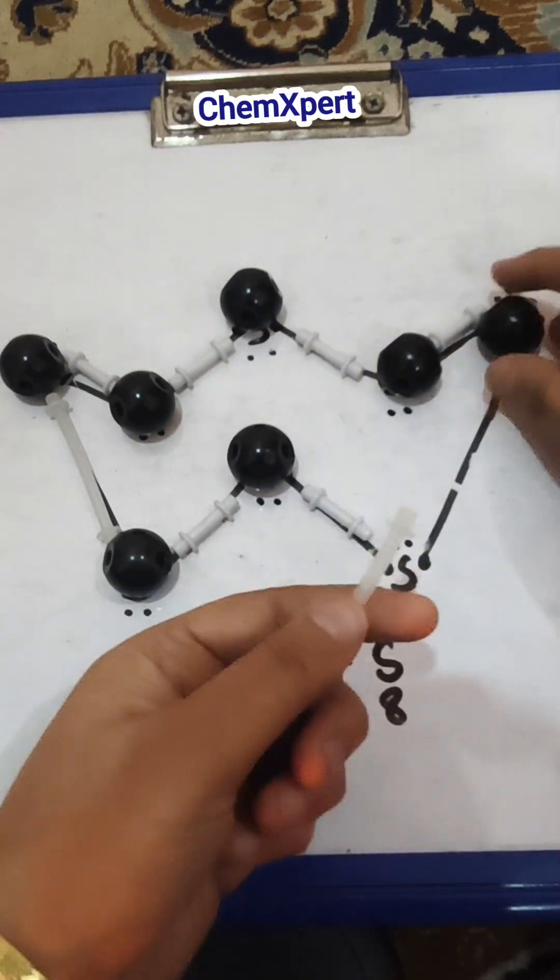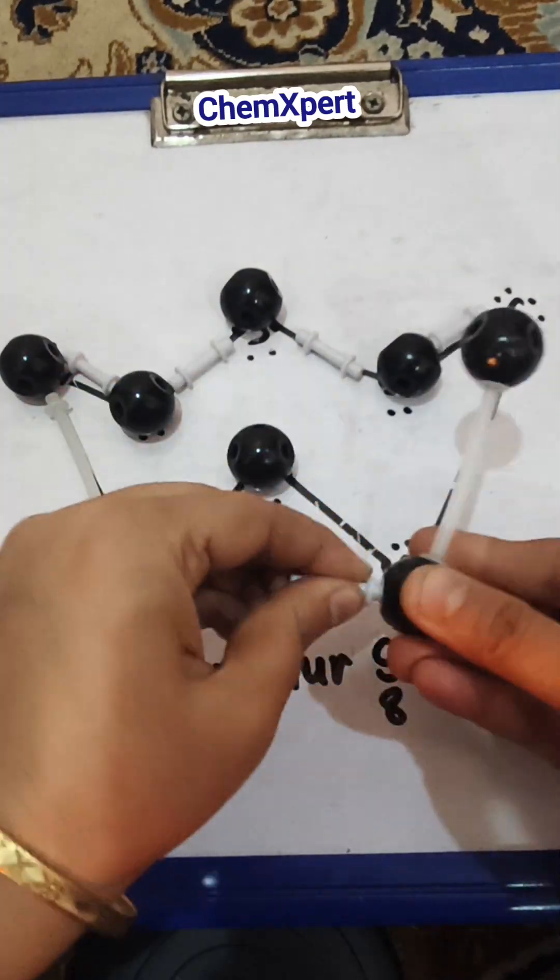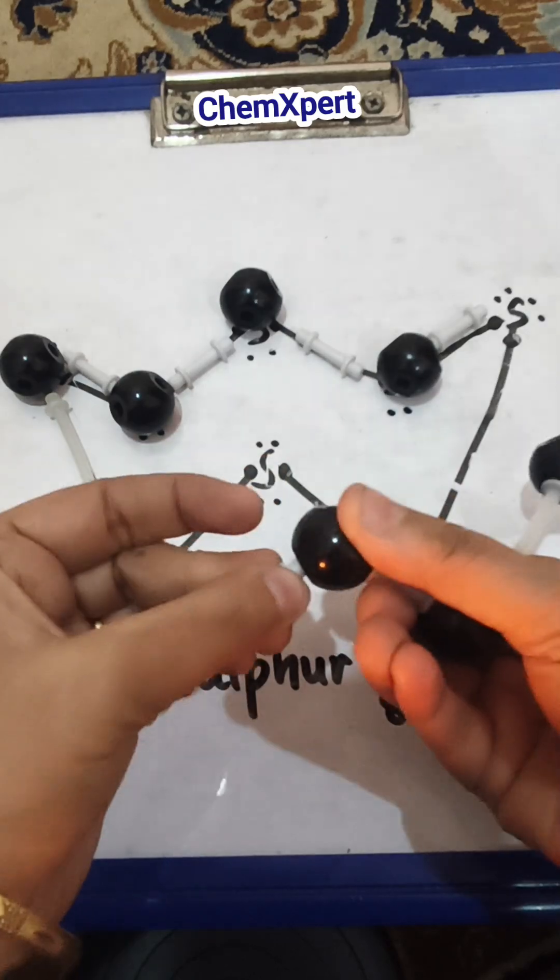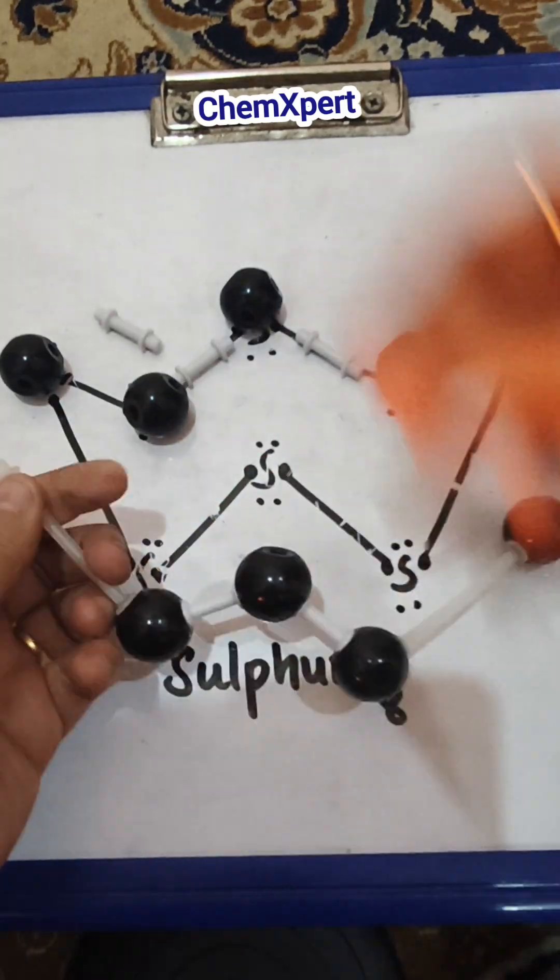In this video, we will prepare a 3D model of sulfur's S8 structure, which is W-shaped or we can say crown-like in structure.